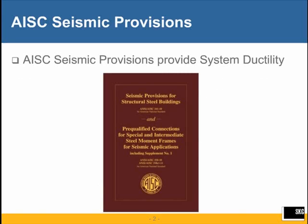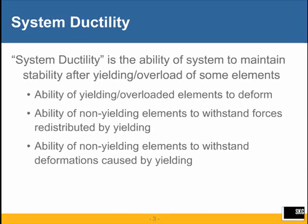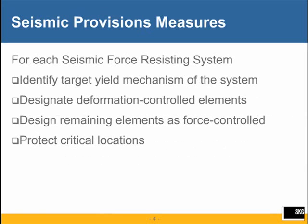The main goal of the seismic provisions is to provide system ductility during an earthquake, and there are several ways to define that. One definition is the ability of the system to maintain stability after yielding or overload of some elements, including the ability of yielding elements to deform in a stable manner, the ability of non-yielding elements to withstand redistributed forces and deformations caused by that yielding. To this end, the AISC seismic provisions take certain measures.